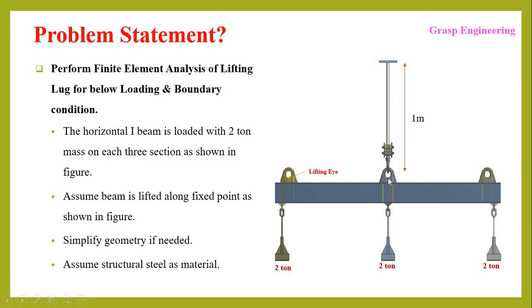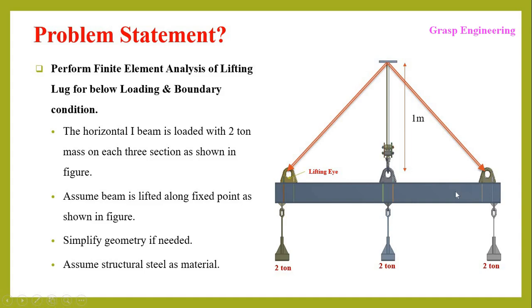We split Part 1 into two parts. In Part 1A we directly connected to the lifting eye with the help of rigid beam elements. In Part 1B we considered the actual lifting hook and performed the simulation, discussing the differences in stresses between using rigid beam and lifting hook. Now in this part, for the same loading and boundary conditions, we will lift using the two outer lifting eyes at the outer edge of the lifting beam, eliminating the central lifting scenario.